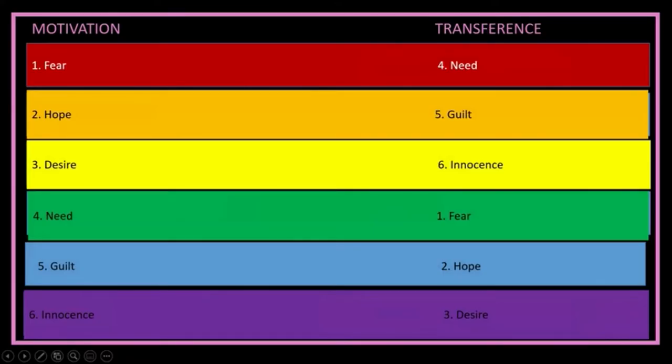So as far as motivation and transference, these are based on the harmonics. So one is the harmonic with four, two is the harmonic with five, and three is a harmonic with six. So if your motivation is fear, then your transference is need. If your motivation is hope, your transference is guilt. If it's desire, it's innocence, and then it flips. So if you're innocence, then the transference is desire. If your motivation is guilt, then your transference is hope. And if your motivation is need, your transference is fear.